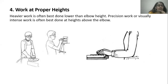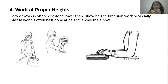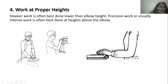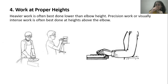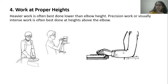The fourth principle is to work at proper heights. It has been observed that heavier work is easier when done below the level of the elbow, while small precise work of precision is done above the elbow level. For example, a man welding or hammering a heavy object works below elbow level, while engraving fine details uses a precision grip above elbow level. Most desk work is done at elbow level.